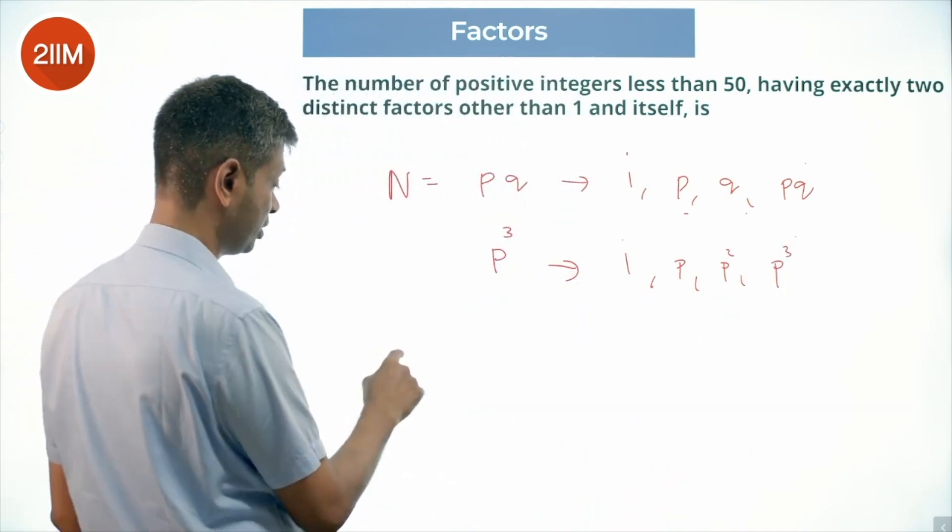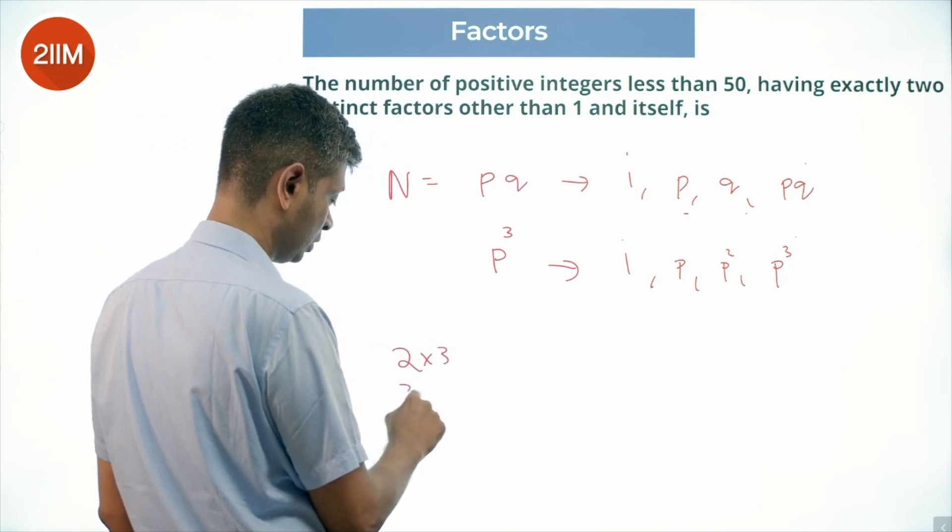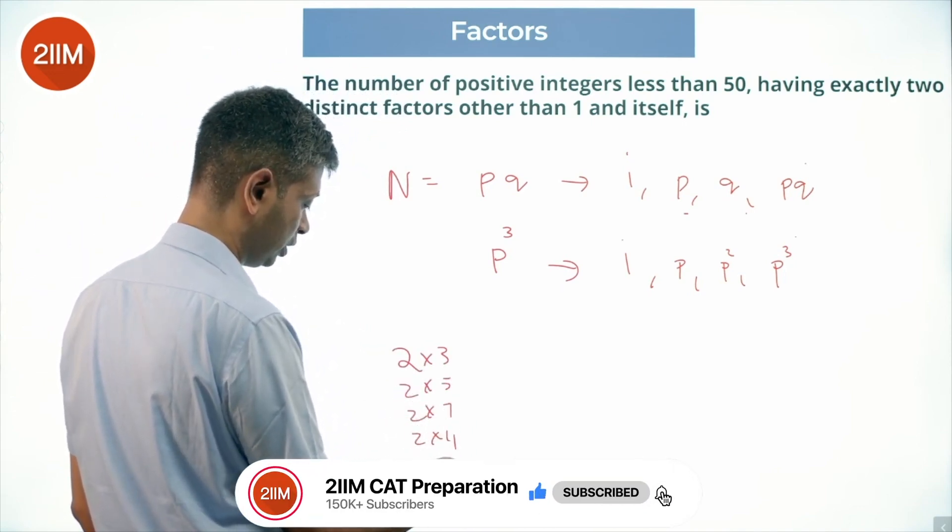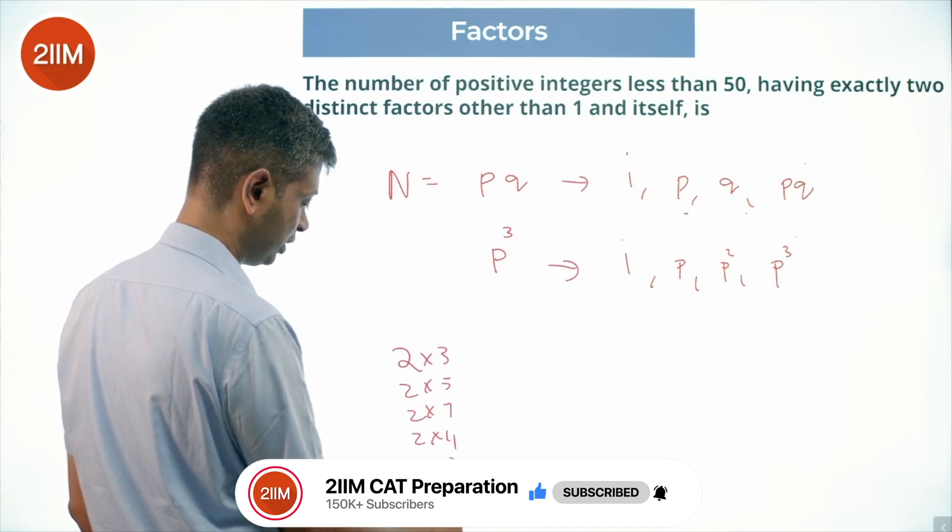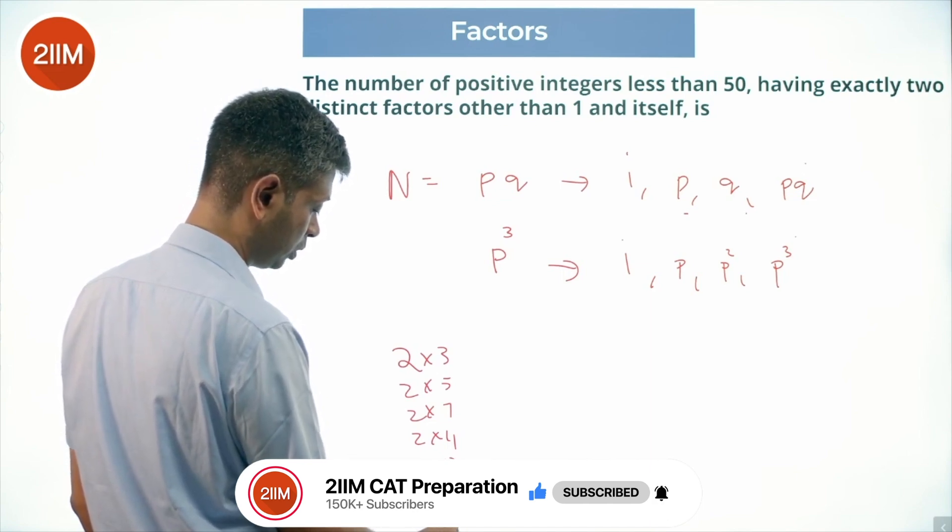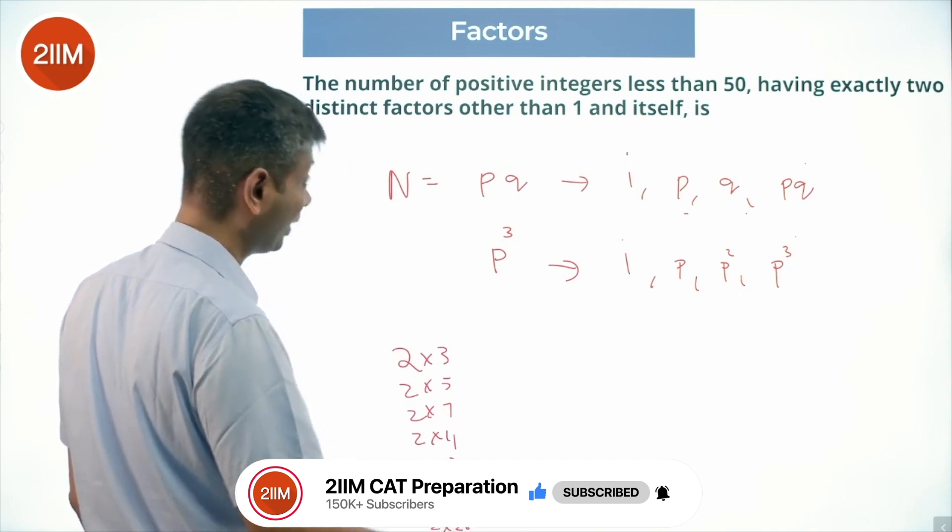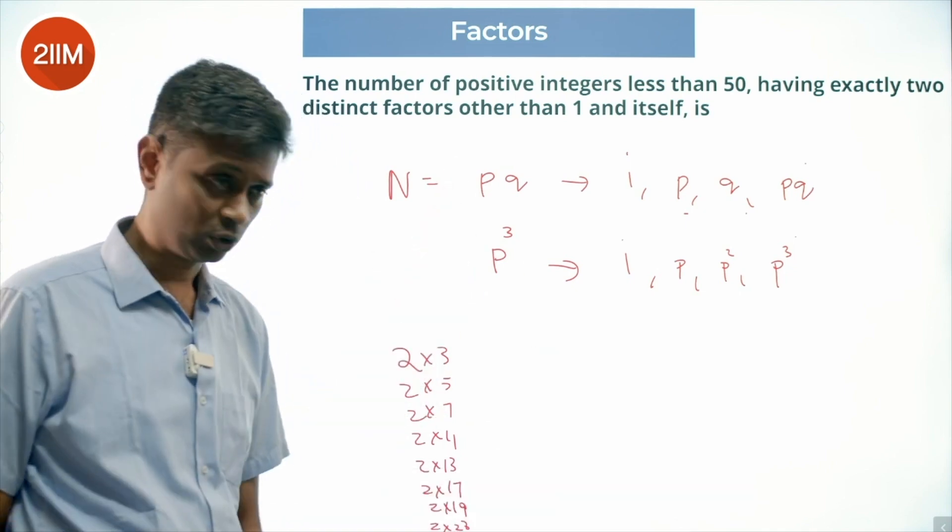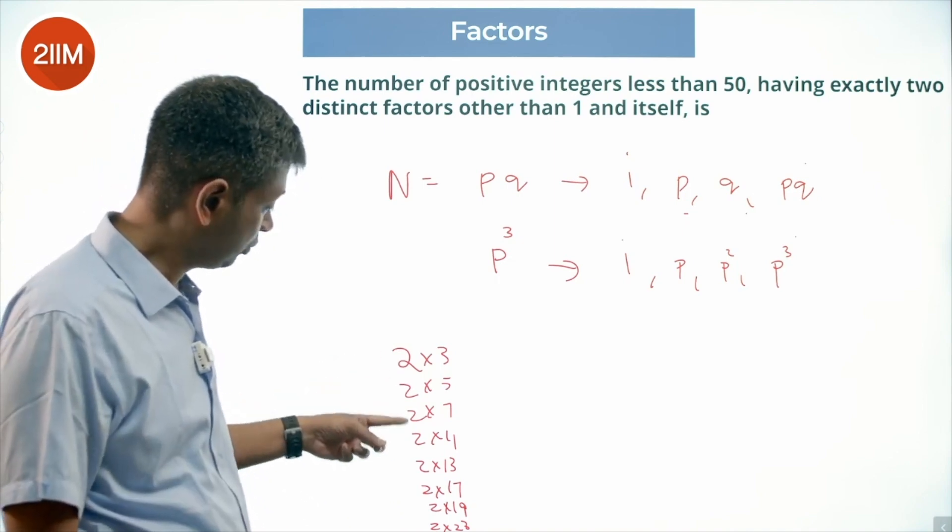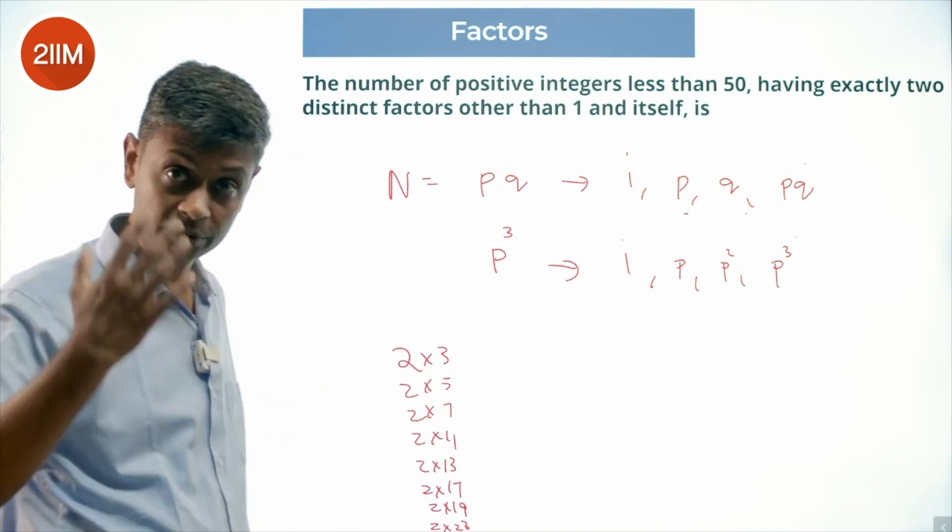Something like 2×3, 2×5, 2×7, 2×11, 2×13, 2×17, 2×19, 2×23. 2×29 will go beyond. All of these are possible, so 1, 2, 3, 4, 5, 6, 7, 8 numbers. Then what do we do?